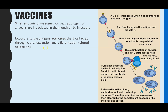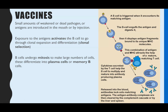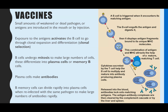When your lymphocytes are exposed to the antigen, it activates the B cells to go through clonal expansion and differentiation - clonal selection, as mentioned in the humoral video. Once clonal selection has occurred, you'll have plasma cells and memory B cells. The plasma cells will make antibodies for that pathogen, but what's important for a vaccine is the memory B cells which are created and will remain in your blood for potentially decades.